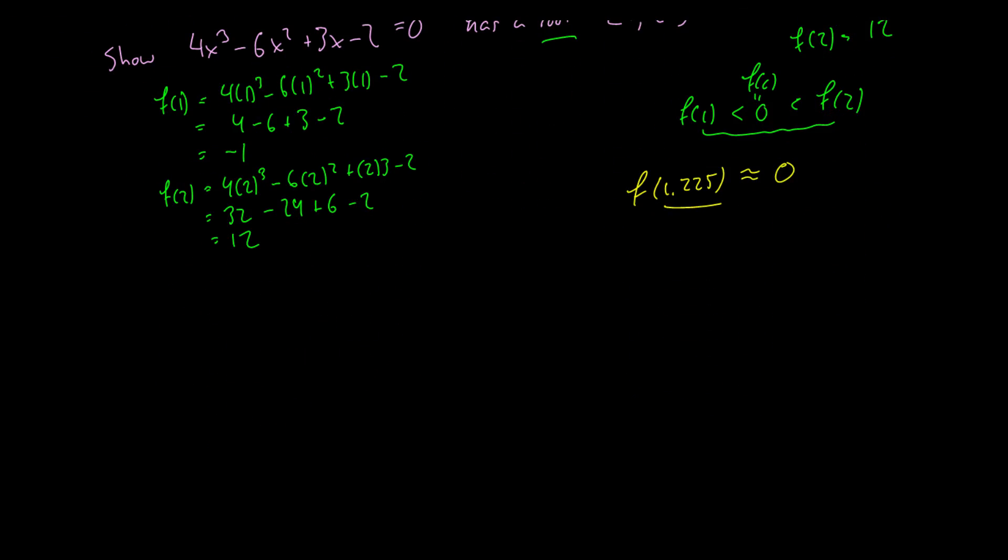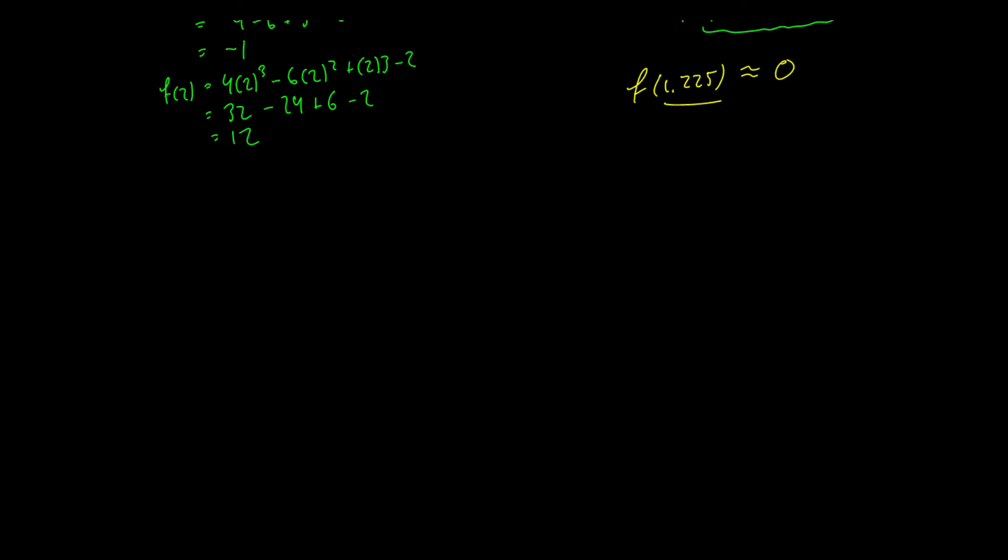Okay, so this is pretty much all there is to the intermediate value theorem. It's a very important theorem when finding out whether roots exist and sometimes in mathematics it's not about finding the number. It's just finding that there exists some number and that's good enough for a mathematician to make claims about functions. So this is why the intermediate value theorem is so important.